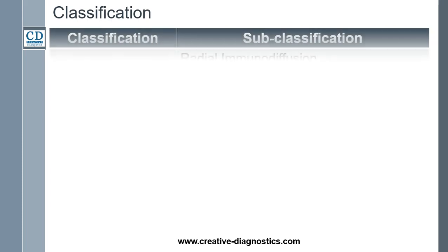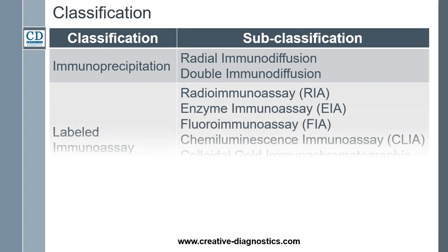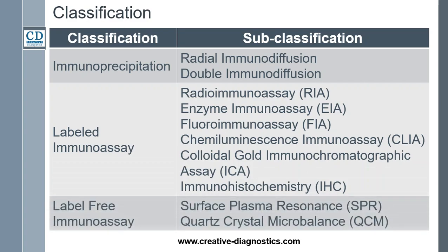Generally, there are three kinds of immunoassays. Two types of precipitation reactions can be used to determine relative concentrations of antibodies or antigens in immunoprecipitation, that is radial immunodiffusion and double immunodiffusion. Immunoassays employ a variety of different labels to allow detection of antibodies and antigens. Labels are typically chemically linked or conjugated to the desired antibody or antigen. According to the difference of label and signal detection strategy, immunoassay can be classified as: radioimmunoassay, enzyme immunoassay, fluoroimmunoassay, chemiluminescence immunoassay, and colloidal gold immunochromatographic assay. Another kind of labeled immunoassay is immunohistochemistry.